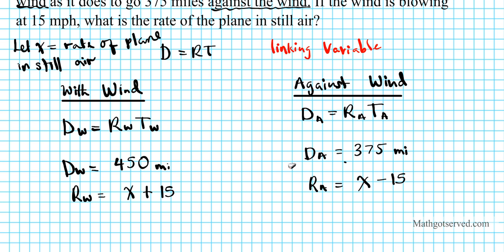They're flying for exactly the same time period — that's why they don't cover the same distance. So the time with the wind, let's call that t, and the time against the wind is also t. That tells us the linking variable for this problem is time. There's always going to be a linking variable, and as you work down the problem it will make more sense.